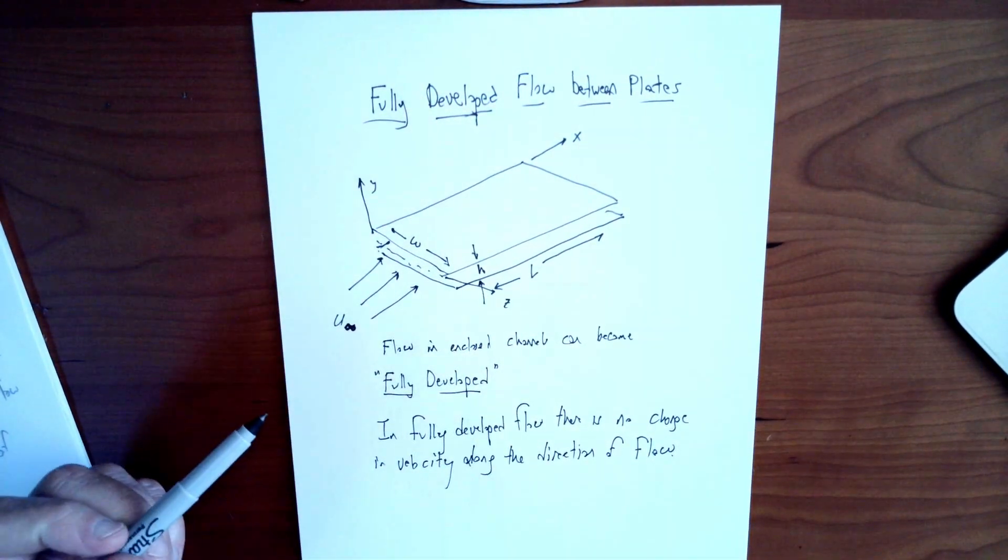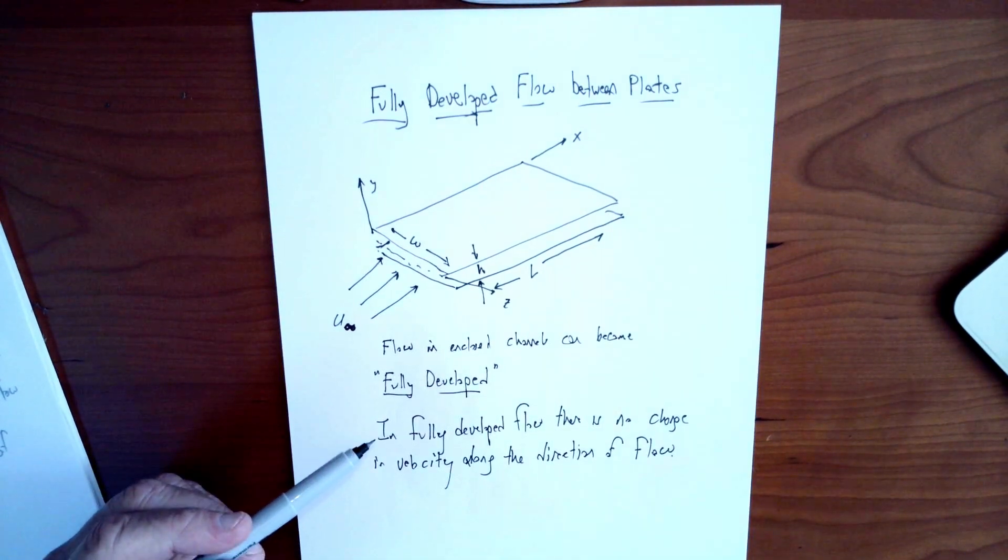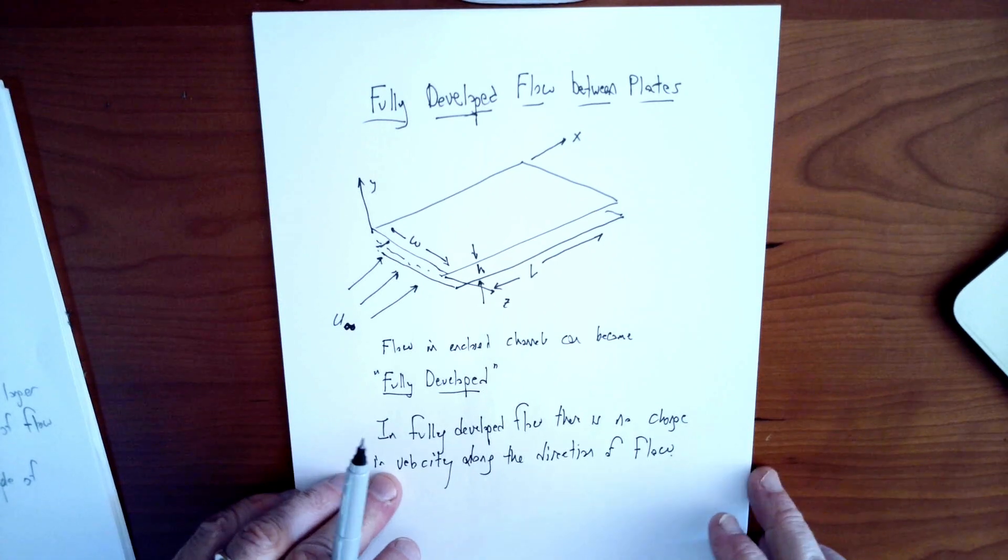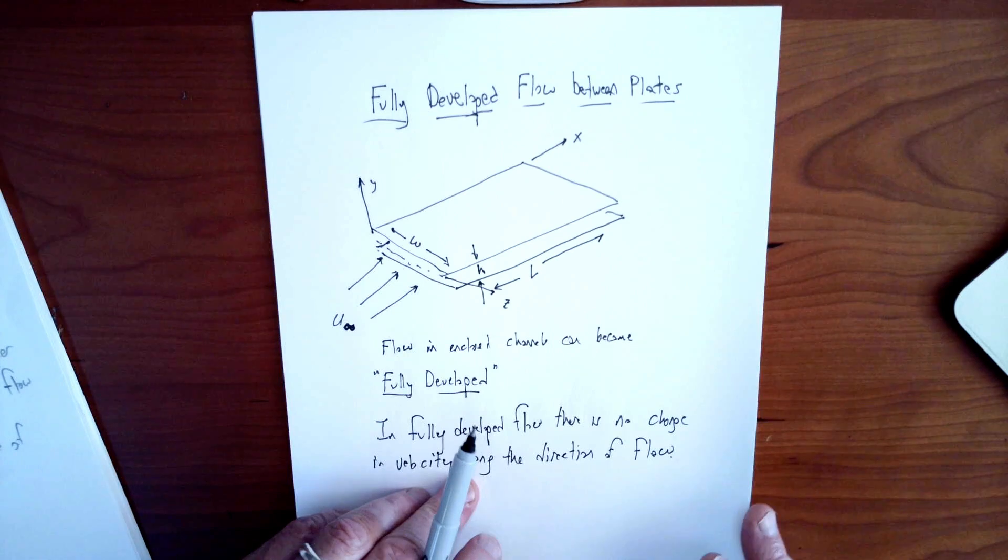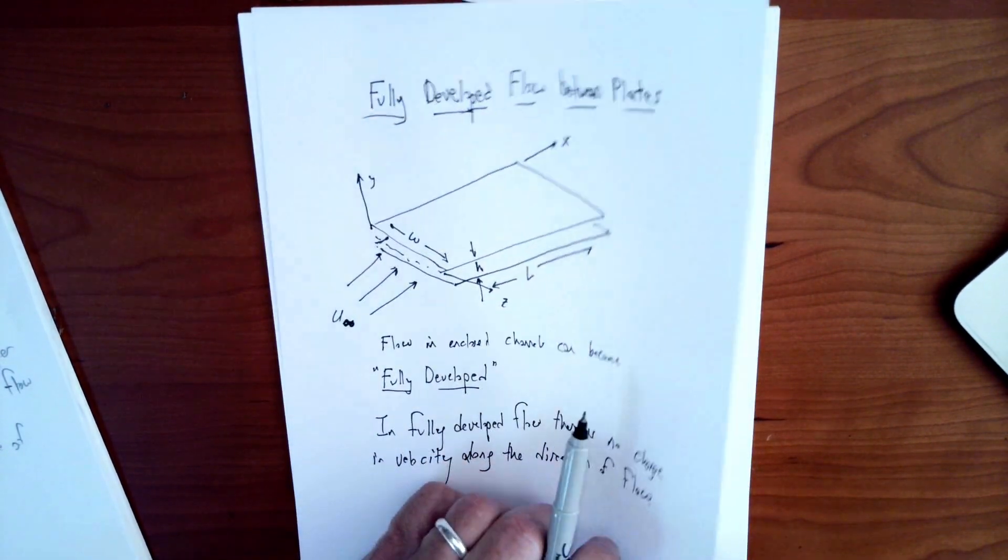What fully developed means is that the flow is no longer changing its velocity in the direction of flow. So we'll draw how that might look as the flow enters this channel. It's going to enter from the left, go in between those plates, and we'll see that the flow will start to change its velocity. But after a while, that velocity change will not happen anymore.